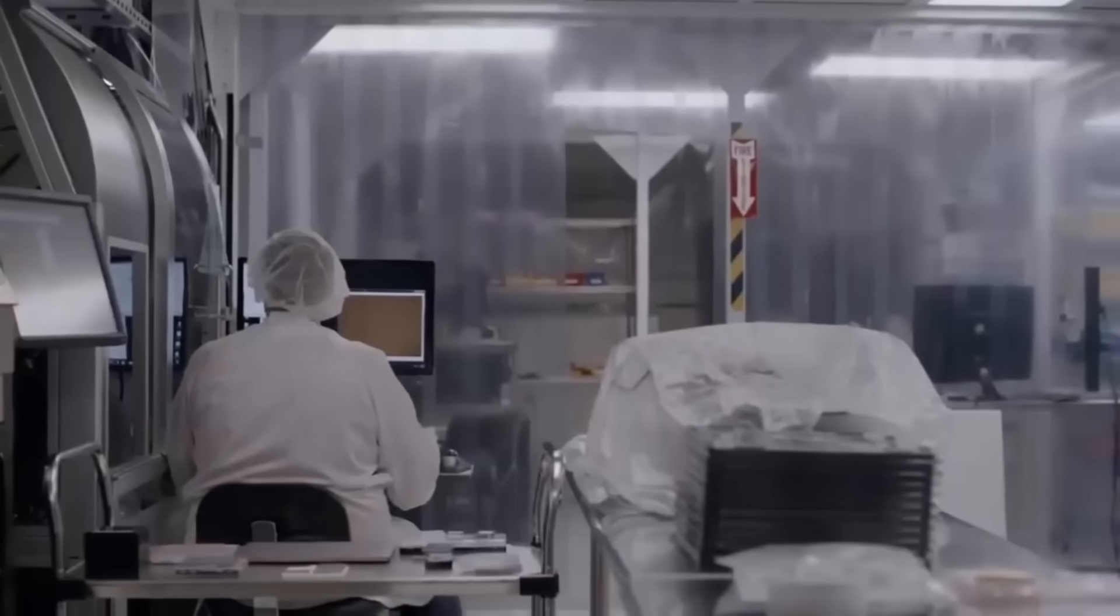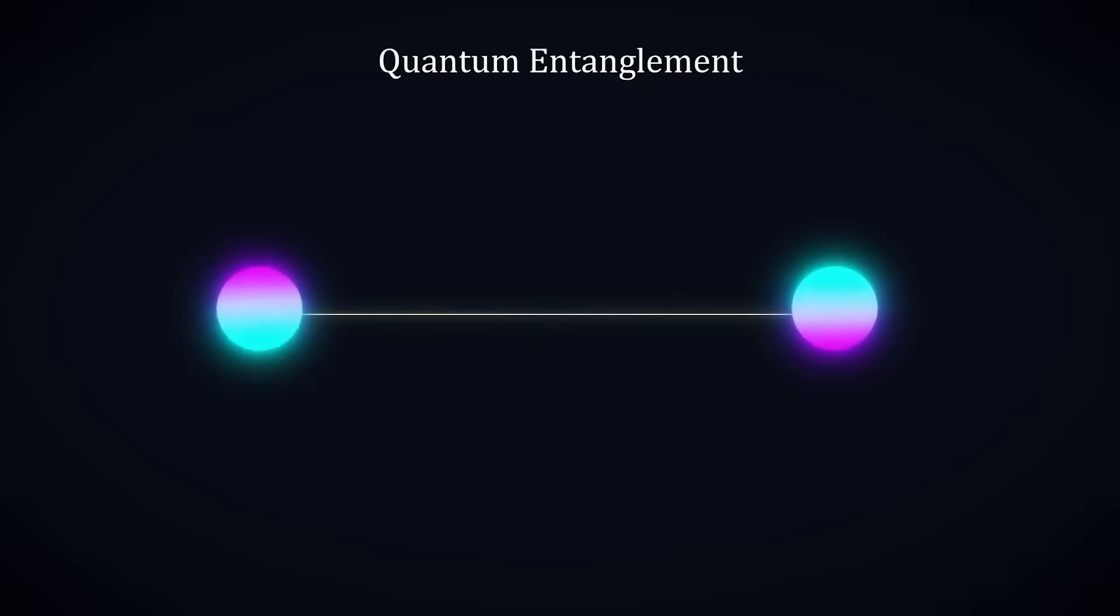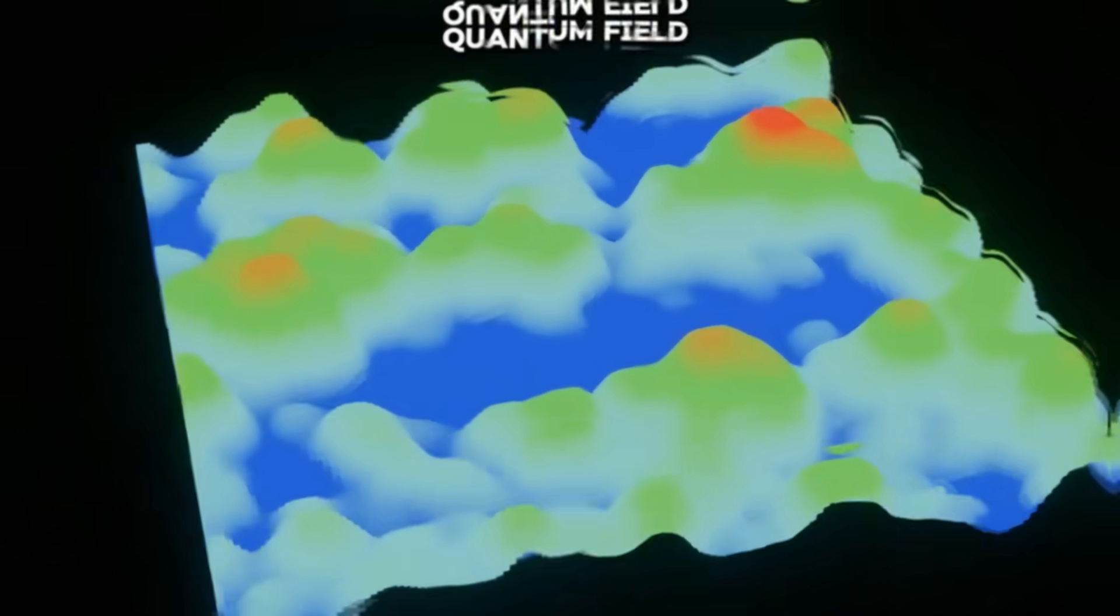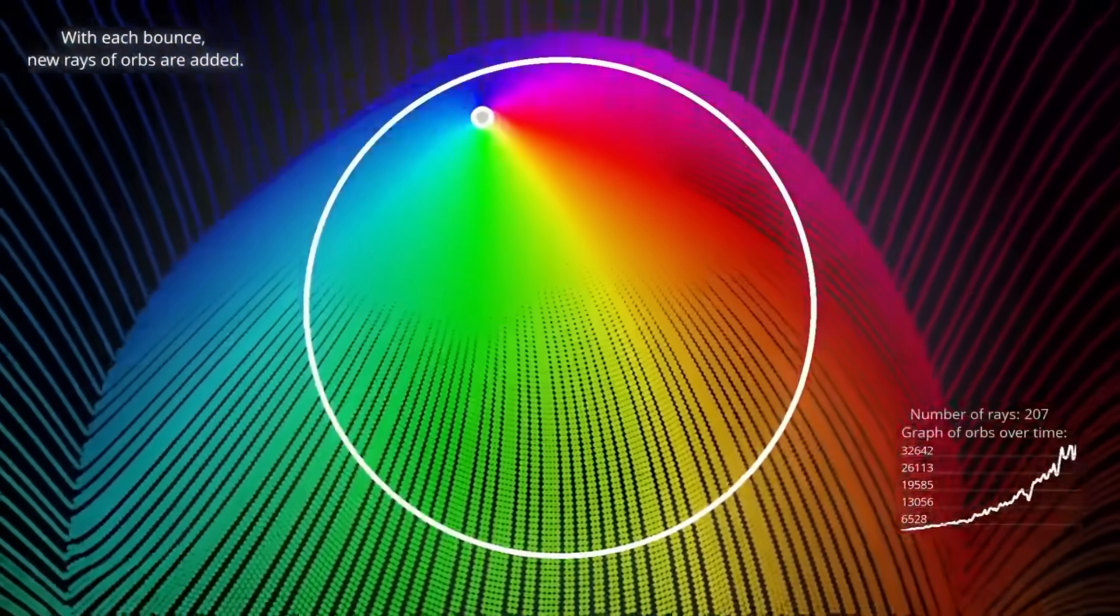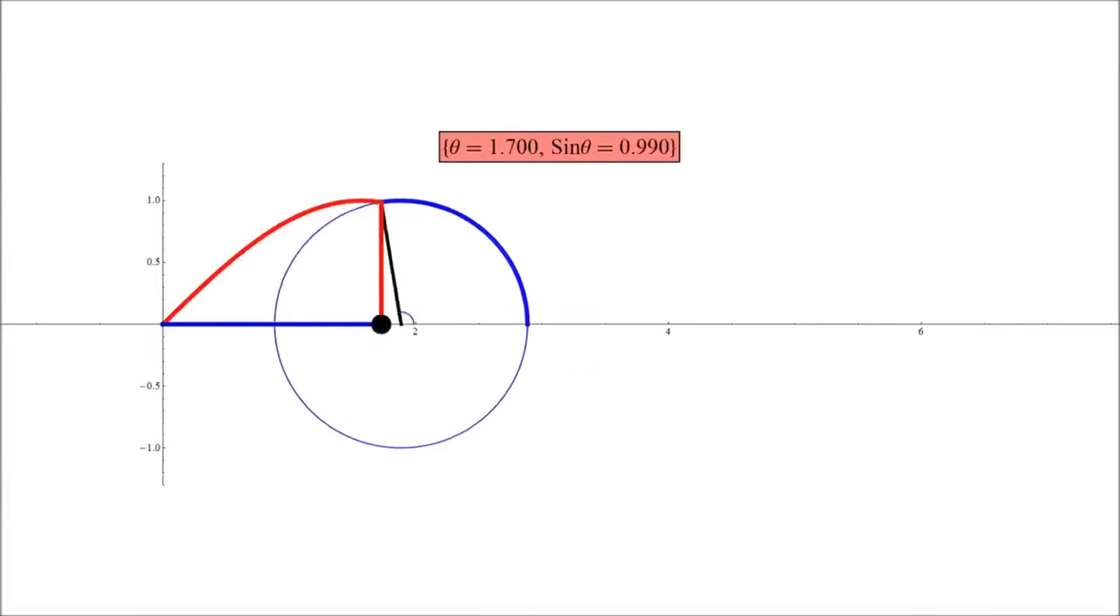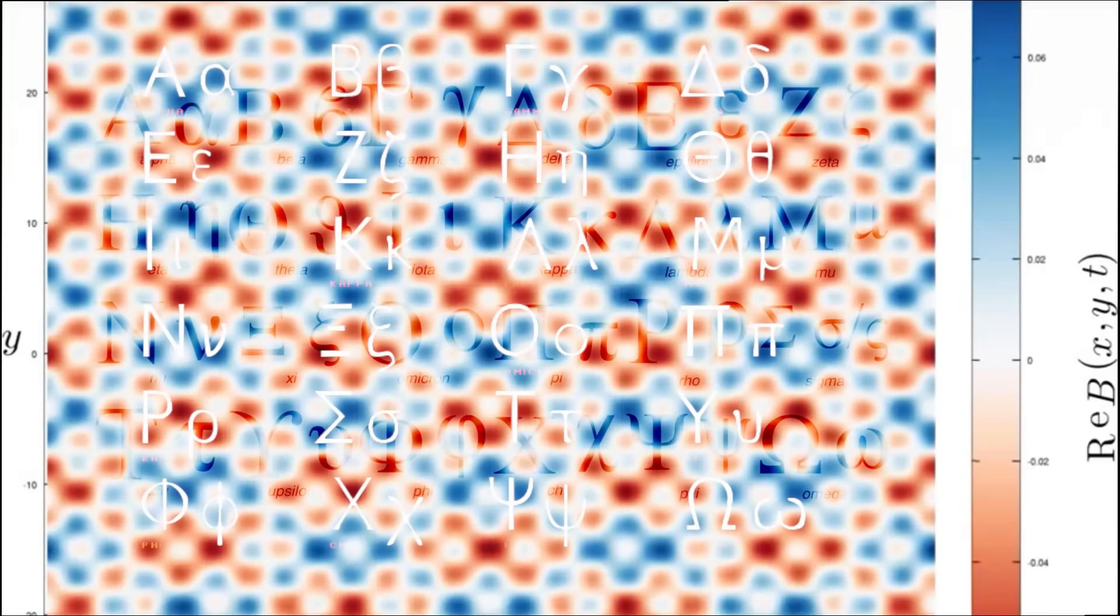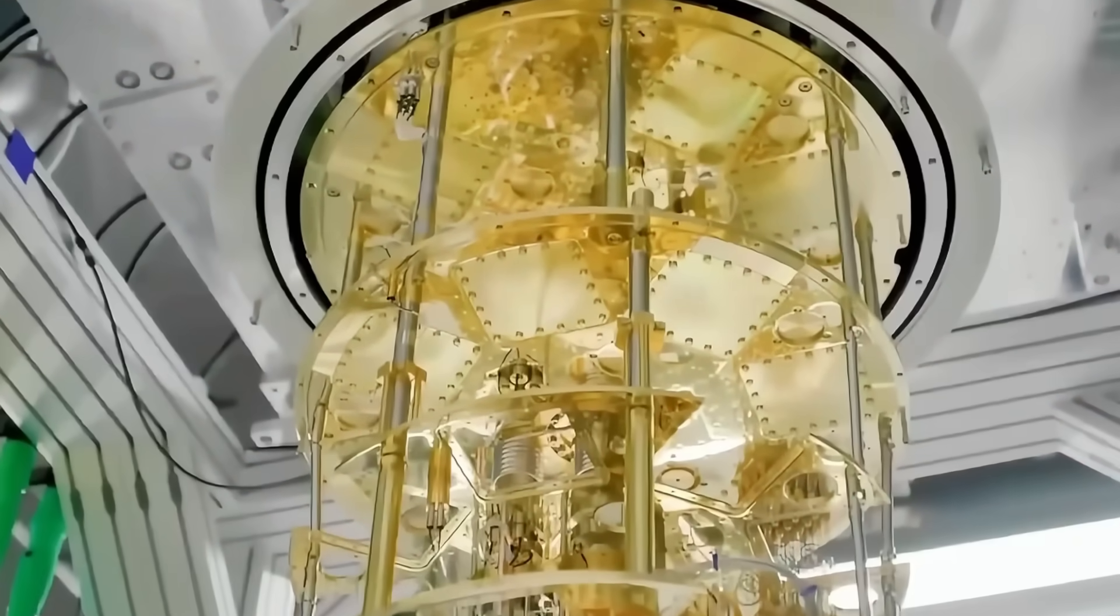Lead researcher Dr. Annika Patel described the moment as surreal, like uncovering a hidden stanza in the poem of existence. The simulation ran for hours, cycling through trillions of quantum states, yet the omega pattern held firm. Engineers watched in disbelief as they zeroed out the registers, expecting the pattern to vanish. But minutes later, it returned, identical in form, yet subtly richer in complexity.